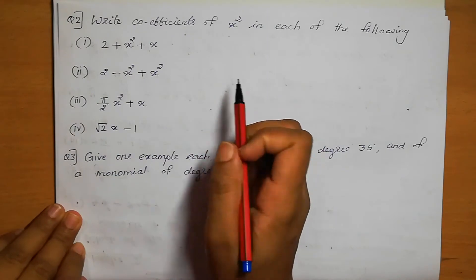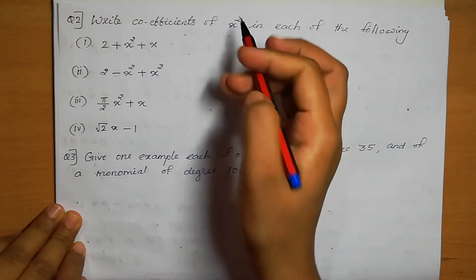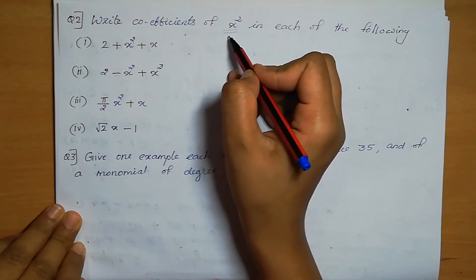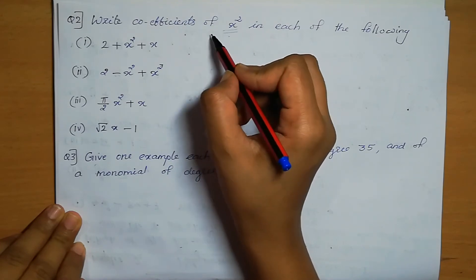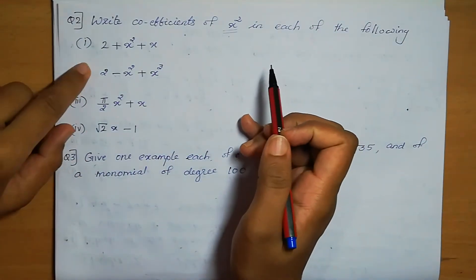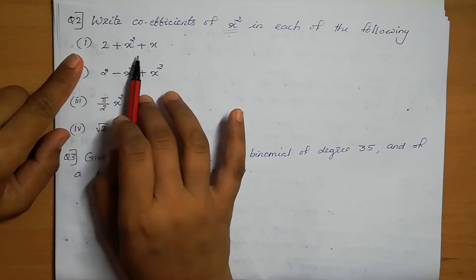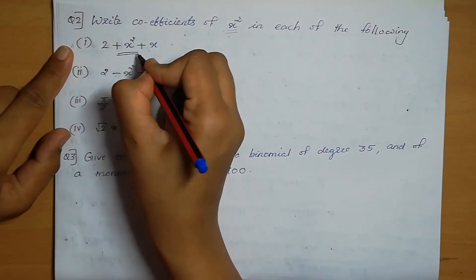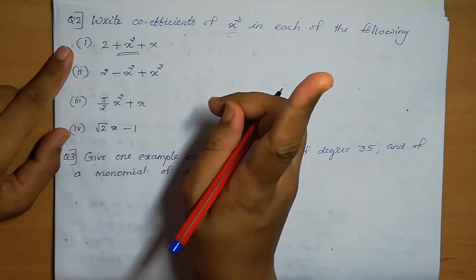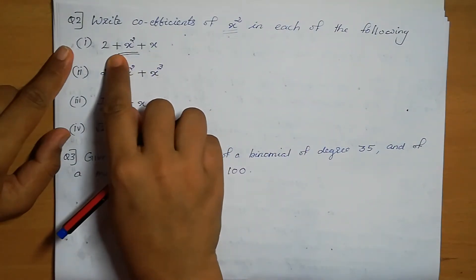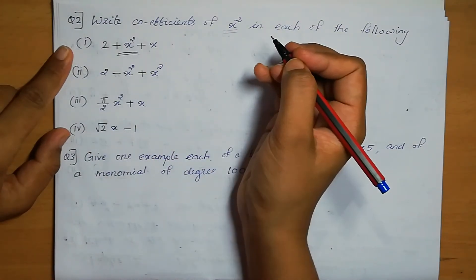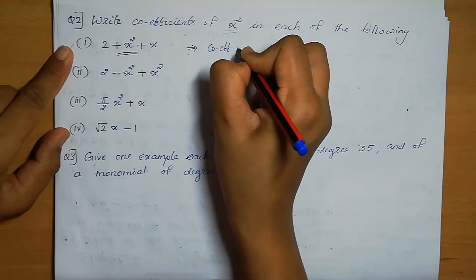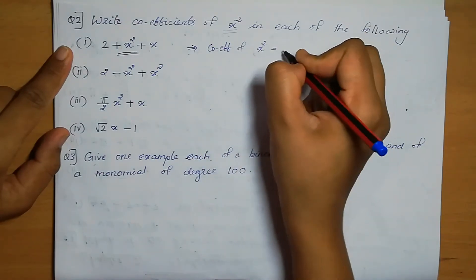Question number 2: Write the coefficients of x squared in each of the following. The coefficient means the number alongside x squared, including its sign. Question 1: 2 plus x squared plus x. The x squared term has only 1 alongside it, and the sign is positive. So the coefficient of x squared is 1.